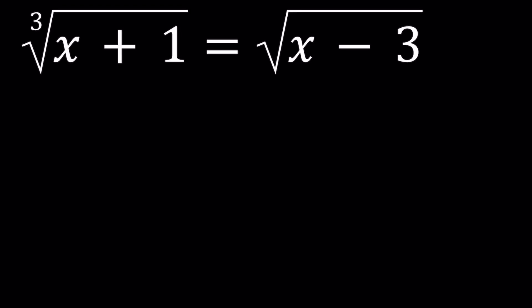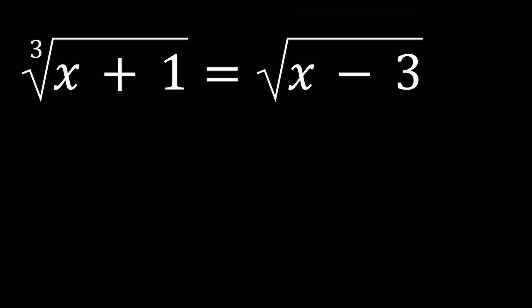Hello everyone. In this video we're going to be solving a radical equation, an equation with two different radicals. We have the cube root of x plus 1 equals the square root of x minus 3, and we're going to be solving for x values. I'll be presenting two methods and let's start with the first one.